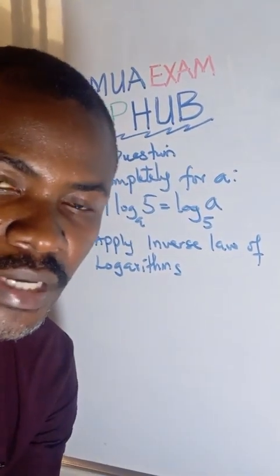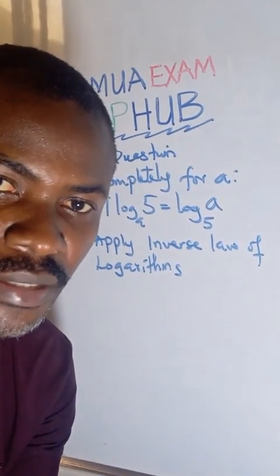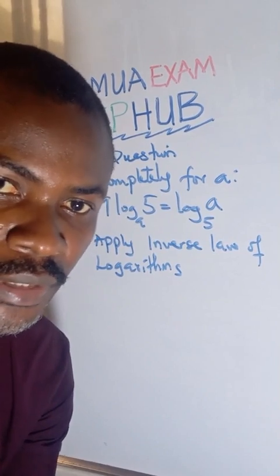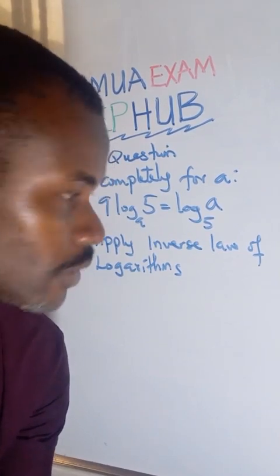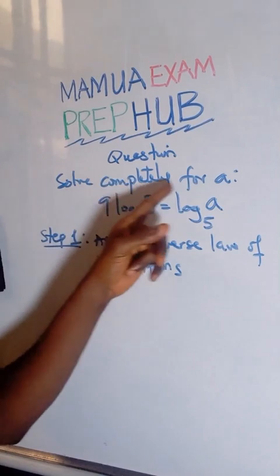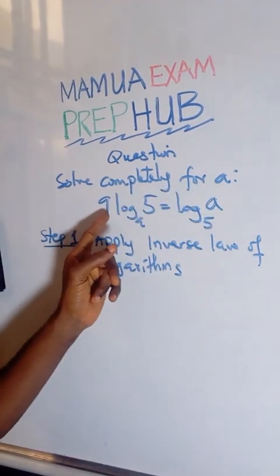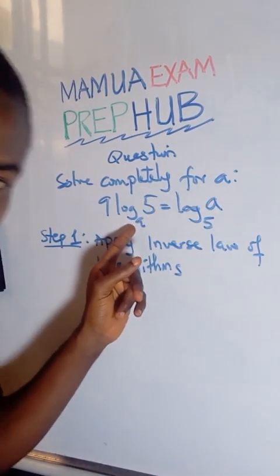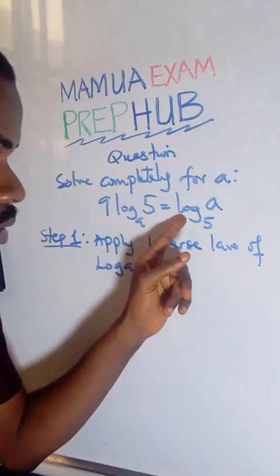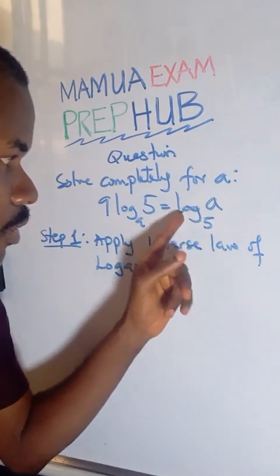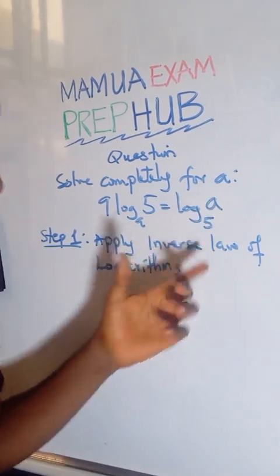Hello students, today we are going to look at the problem on logarithm and I have it on the board. I will quickly read out the equation. We have to solve completely for a: 9 times log base 5 of a equals log base a of 5.